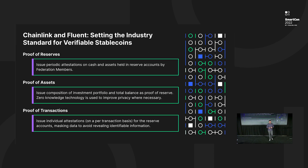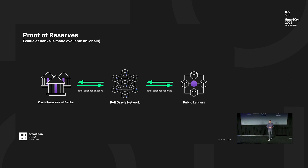So at a high level: proof of reserves is an existing solution; proof of assets uses zero-knowledge proofs to obscure confidential information while keeping it verifiable; and proof of transactions rounds out the framework. The proof of reserves flow starts with core banking APIs — we stage these APIs and allow the total balance to be written to chain through a proof of reserve oracle network, which can go to multiple public ledgers. The interesting thing about Chainlink is they're chain-agnostic, so as we issue native stablecoins on multiple chains — currently Ethereum, but expanding to others — they can do the same thing across other protocols.